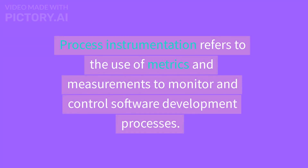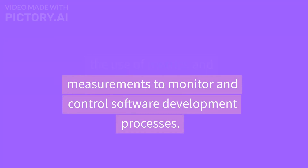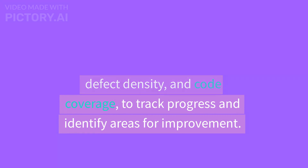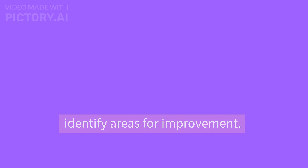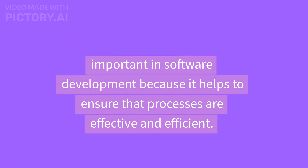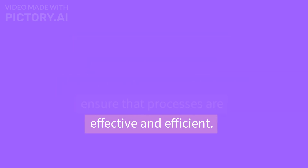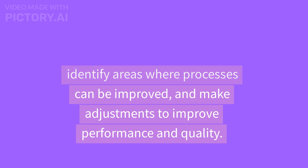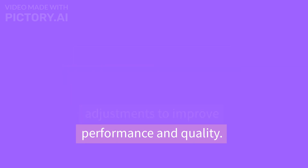Process Instrumentation refers to the use of metrics and measurements to monitor and control software development processes. This can include the use of core metrics such as lines of code, defect density, and code coverage to track progress and identify areas for improvement. Process Instrumentation is important because it helps to ensure that processes are effective and efficient. By monitoring key metrics, teams can identify areas where processes can be improved and make adjustments to improve performance and quality.